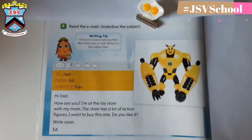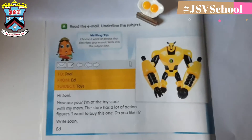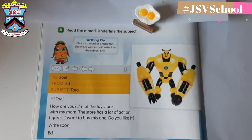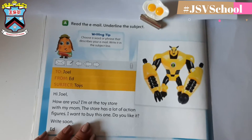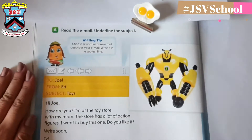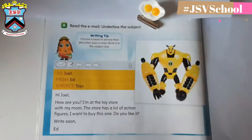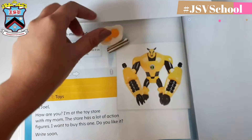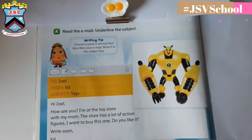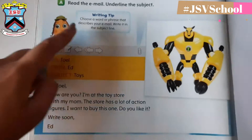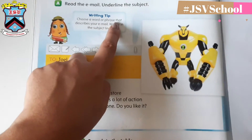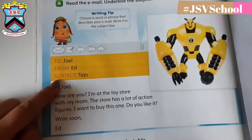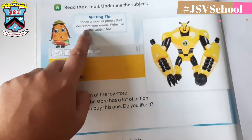Teacher Crystal has an example of an e-mail. Today we are going to read an example of an e-mail, and we are going to learn the writing tips on how to write one, because today you are going to write one e-mail. Now let's read the e-mail and underline the subject. Here is a writing tip: choose a word or phrase that describes your e-mail and write it in the subject.